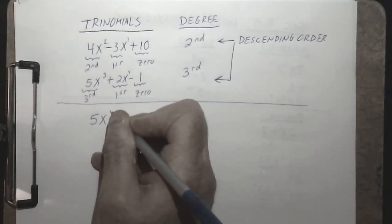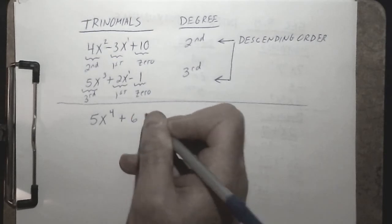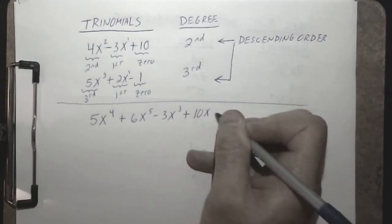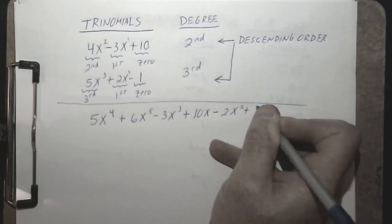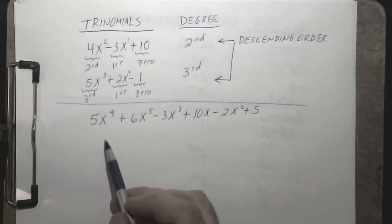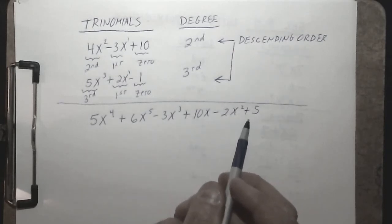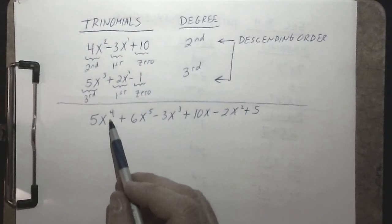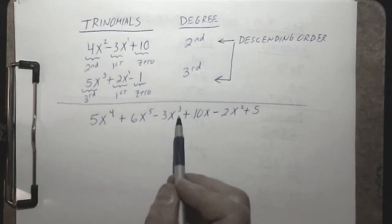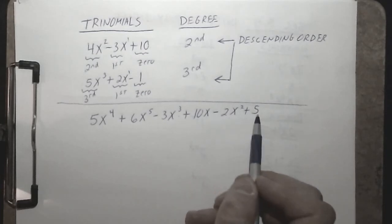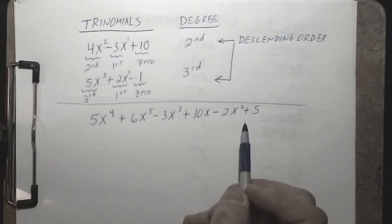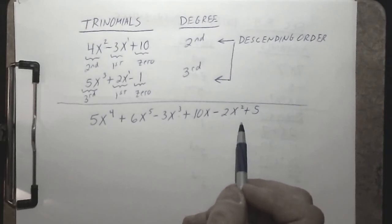Now suppose we have this polynomial here. Notice this polynomial has five terms in it, and it is not written in descending order, as the degree of each term does not decrease strictly from left to right — we go from a fourth-degree term up to a fifth-degree term, down to a third-degree term, down to a first-degree term, but then up to a second-degree term, and then down to a zeroth-degree term. It is always legal to rearrange terms in a polynomial to write it in descending order. The only thing you have to be careful with is to bring the sign in front of the term along with the term when you rearrange it.